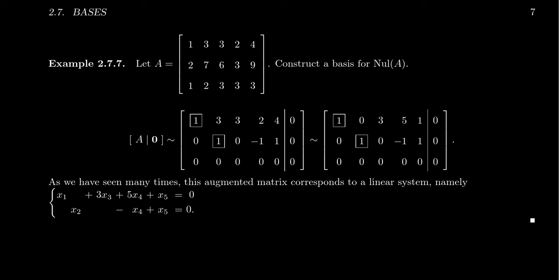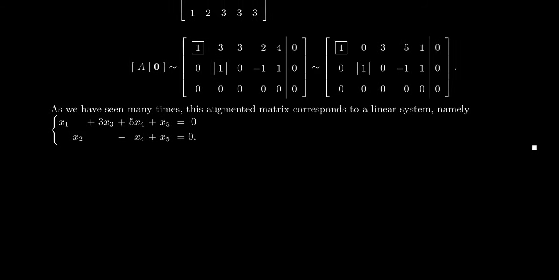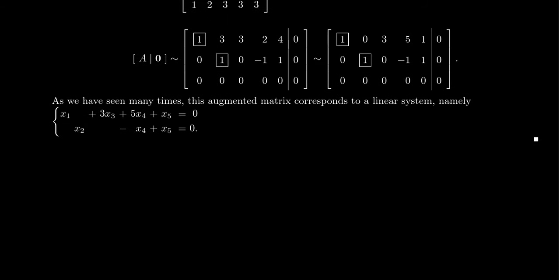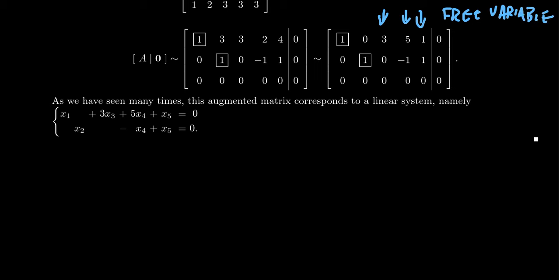Looking at these equations, we see that because of the pivots, x1 and x2 are going to be dependent variables. The first and second columns of A give us a basis for the column space. But for the null space, we're going to focus on the non-pivot columns, because these give us the free variables. The solution to a homogeneous system depends on how many free variables you have — that's why the nullity is going to be three here.